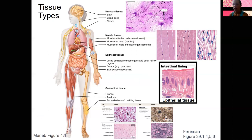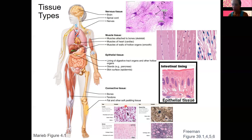Lastly, we have connective tissue — the broadest type of tissue. Connective tissue supports, connects, and protects. Bones, tendons, and fat are all pretty different things, and blood is also connective tissue — it's a very diverse group. These all have a larger amount of extracellular material. Areolar is an example here that has a whole lot of extracellular stuff.